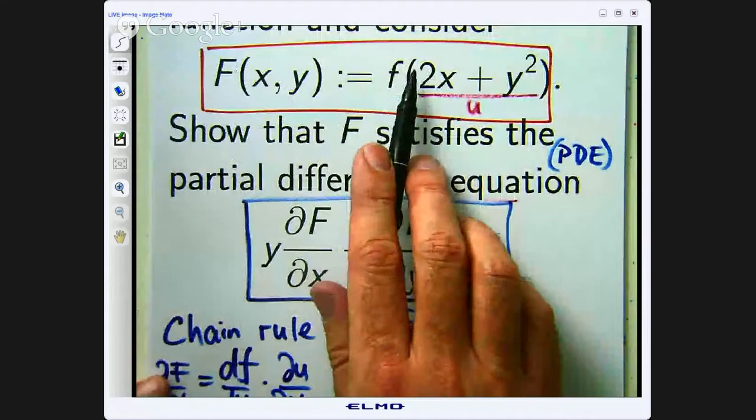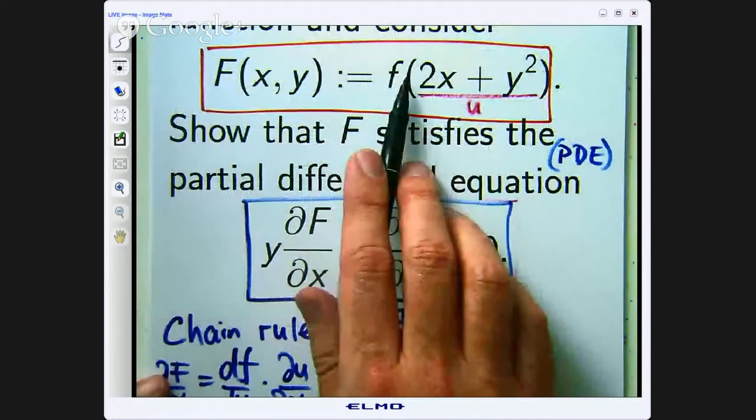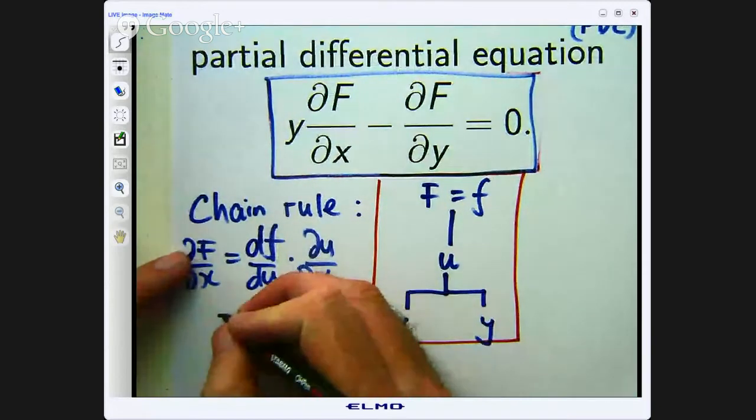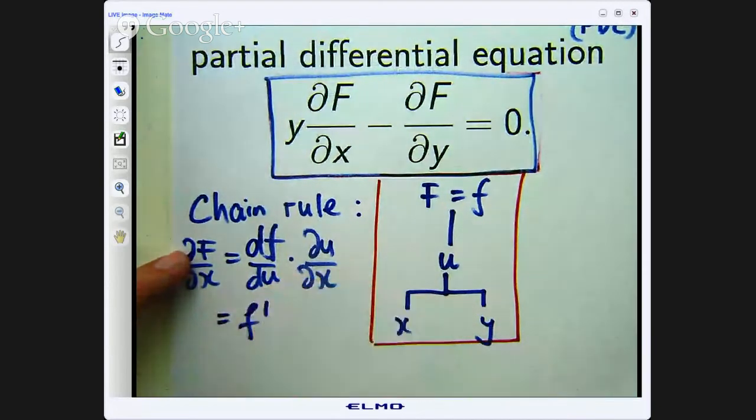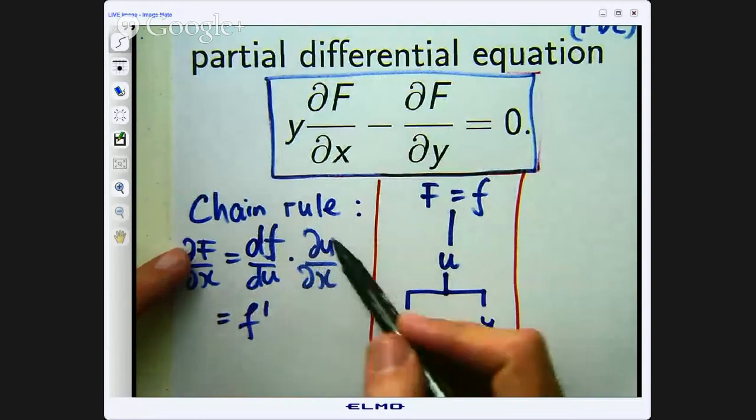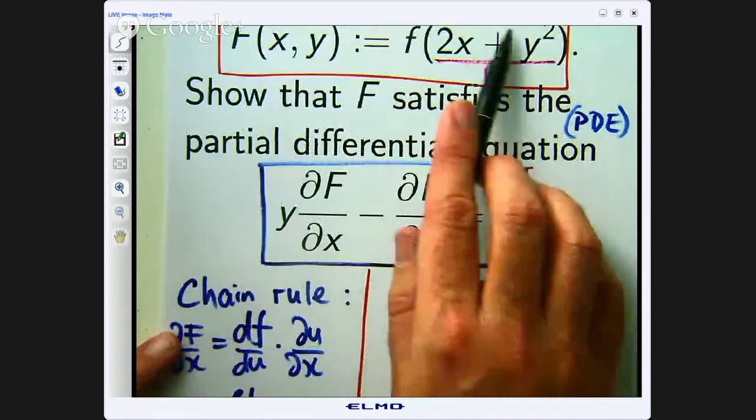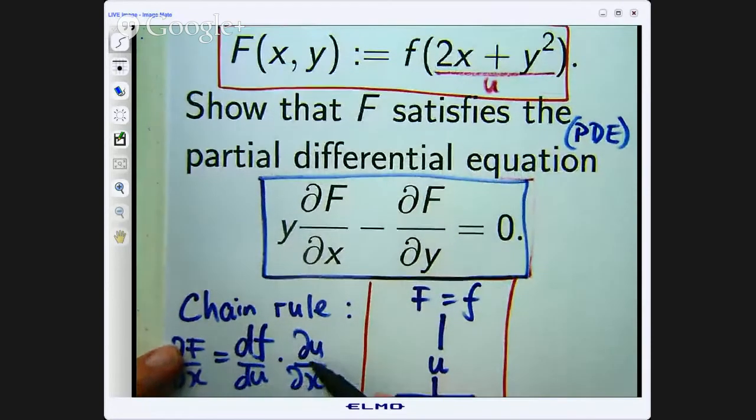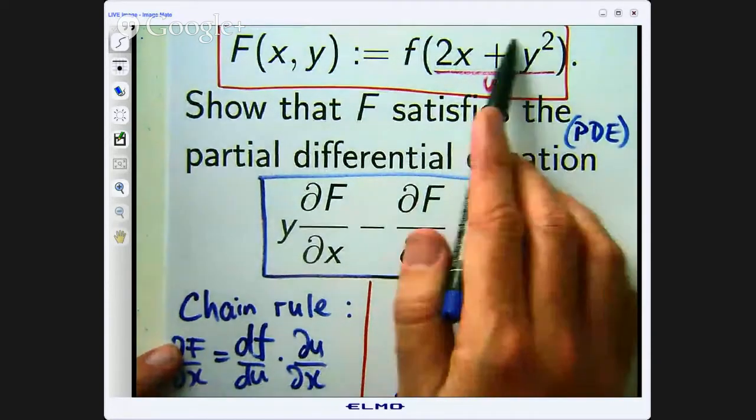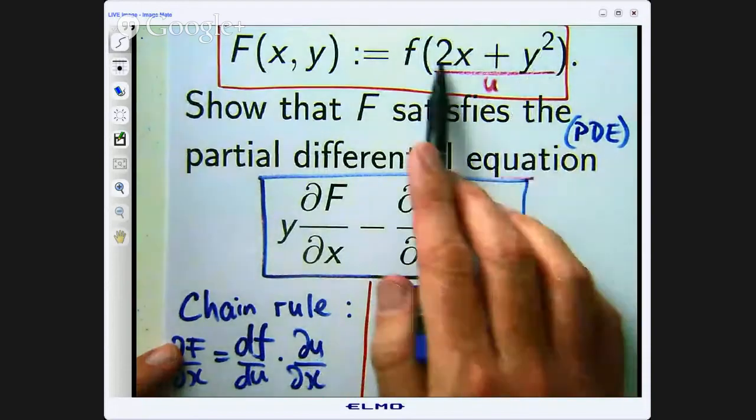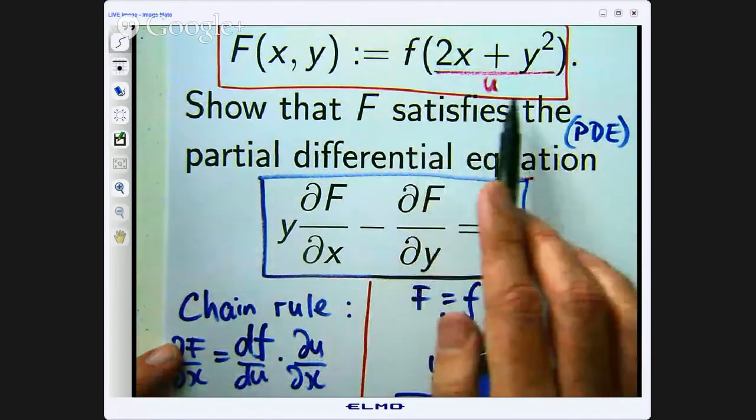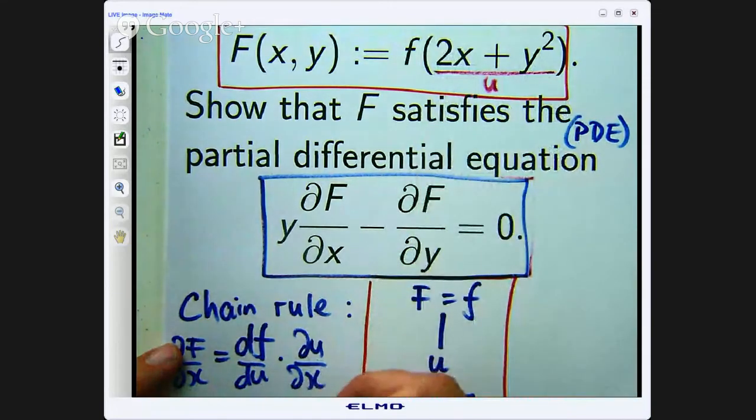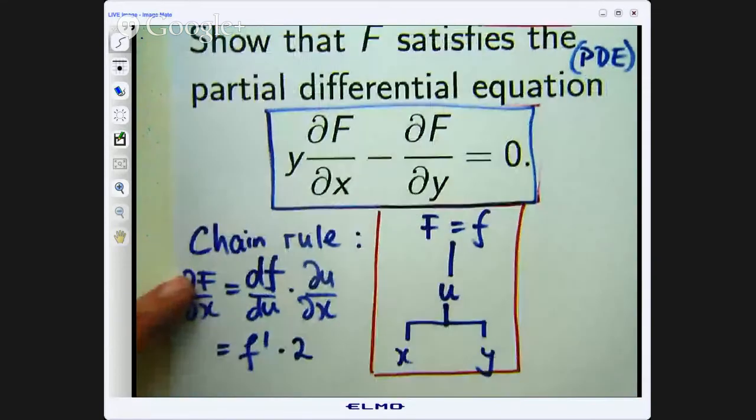Okay, so how do we actually compute this? Well df/du we don't know. If we go back up here we don't know what f is. It's arbitrary and differentiable. So we cannot simplify this any more. So all I'm going to do is just denote it by f' and du/dx. Well if u equals 2x plus y squared, what is du/dx going to be? Well imagine y is a constant and you partially differentiate everything in this bracket with respect to x. So that will be 0 and that will go to 2.